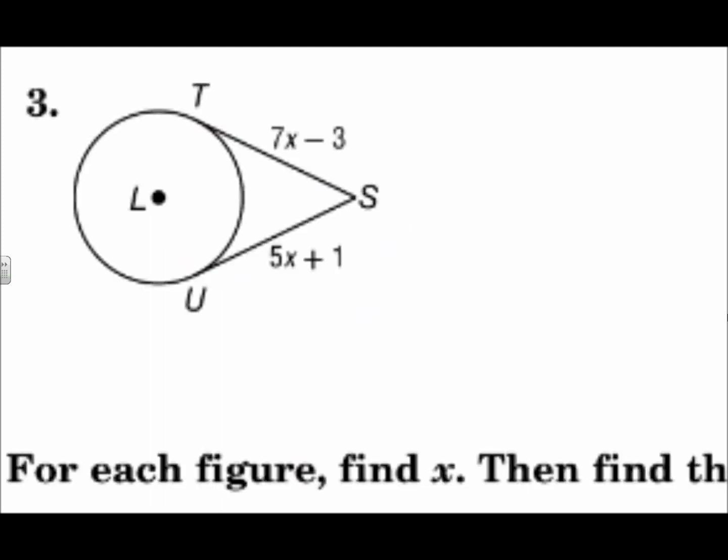So on question 3, that's exactly what's going on here. We have two tangents that intersect at the same point. They must be congruent. So their measures must be equal. Write your equation, making the measures equal, and solve.